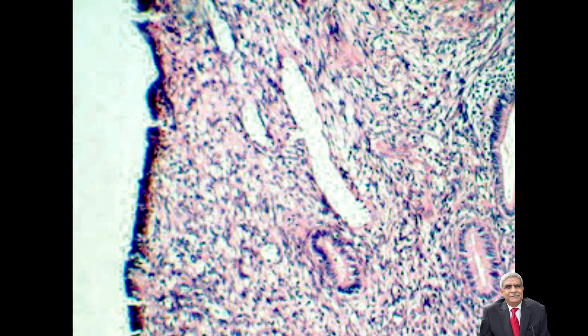In this photograph you can appreciate the microscopic features of endometrial polyp. There is a lining of epithelium and the endometrial glands are embedded in endometrial stroma. Please note that in this case the endometrial glands are without any secretory activity.